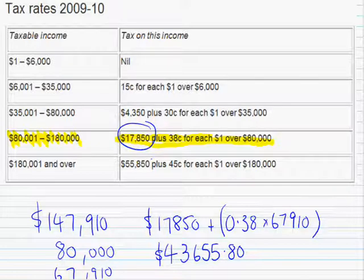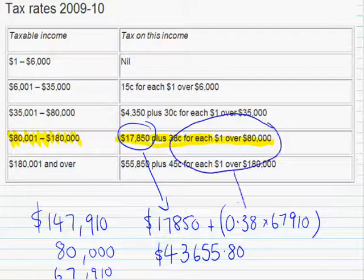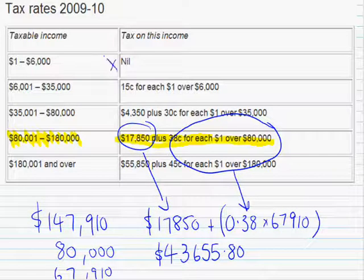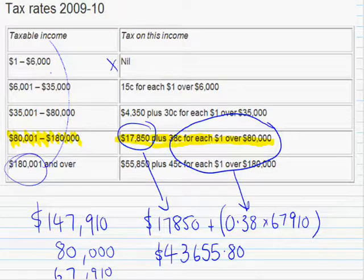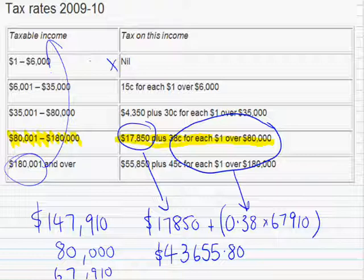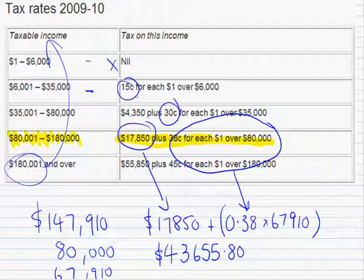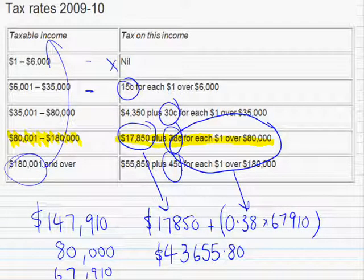So that's how you work this out — you work out this base amount, then how many dollars are over the threshold, work out each little bit and add them up. What you'll notice is if you have a taxable income below $6,000, you don't pay any tax at all, and this goes for everyone. Even if you earn $180,000, for the first $6,000 you don't pay any tax. This tax scale is incremental: for the first $6,000 you pay no tax; from $6,000 to $35,000 you're paying $0.15 cents in the dollar; from $35,000 to $80,000 you're paying $0.30 cents in the dollar; then $0.38 cents in the dollar; then $0.45 cents in the dollar. I hope this helps you work them out.